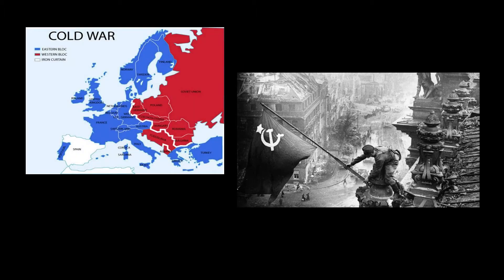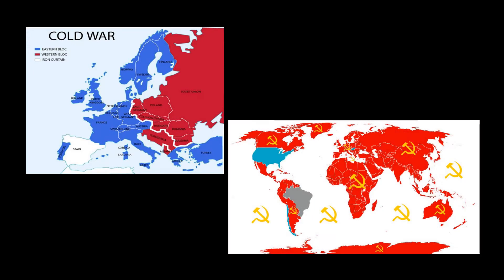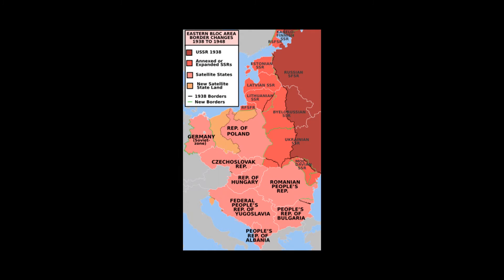Following the surrender of Nazi Germany in May of 1945, the uneasy wartime alliance between the United States and Great Britain on one hand, and the Soviet Union on the other began to unravel. The Soviets were determined to maintain control of Eastern Europe and were intent on spreading communism worldwide. By 1948, the Soviet Union had annexed several occupied countries and converted them into Soviet-controlled satellite states, including the People's Republics of Poland, Hungary, Romania, Bulgaria, and Albania, the Czechoslovak Socialist Republic, and later the German Democratic Republic.